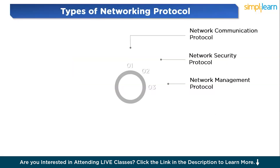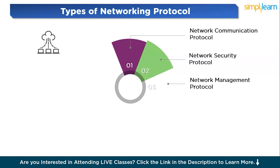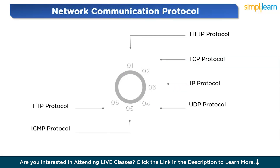Networking protocols can be divided into three major categories. The first is network communication protocols, which ensure seamless data exchange between devices. The second is network security protocols, which ensure secure communications against cyber threats. The third is network management protocols, which monitor and optimize network performance. Now let's move ahead and understand network communication protocols.